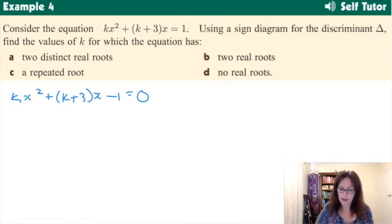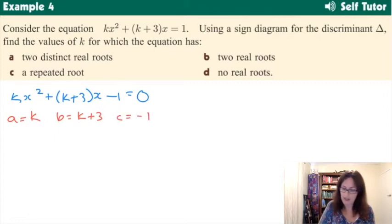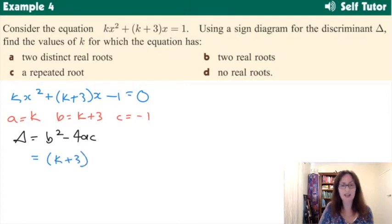So we write kx squared equal to 0. Now we can start thinking about the discriminant, and for that we need to identify our a, our b term, our b term, and our c term. And substituting that into the discriminant, we would get for our b term, we have to square that whole thing. Please don't write k squared plus 3 squared. That's not how you do it. You have to square the whole expression. There, take 4k times by negative 1.